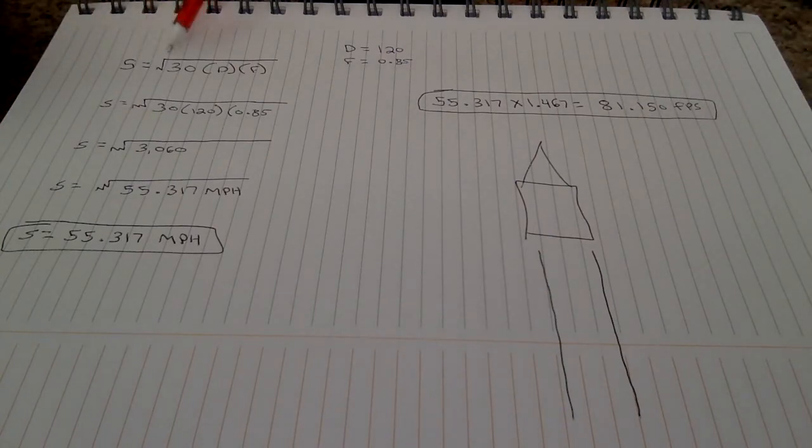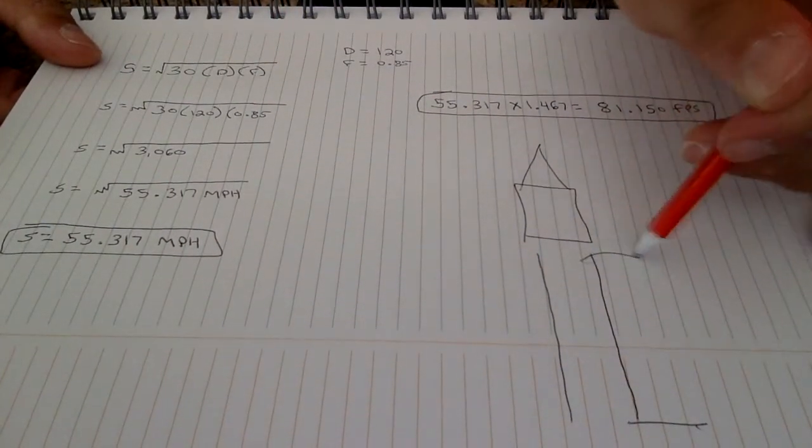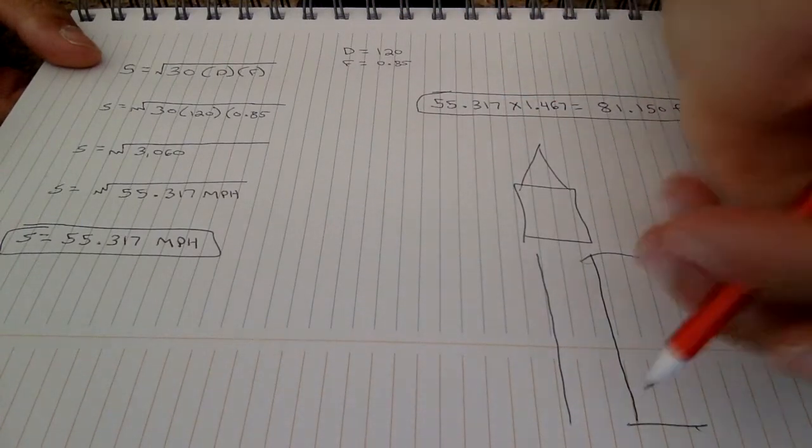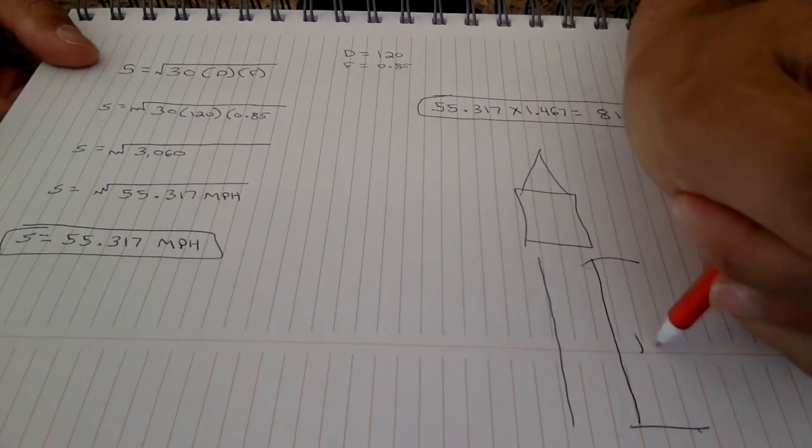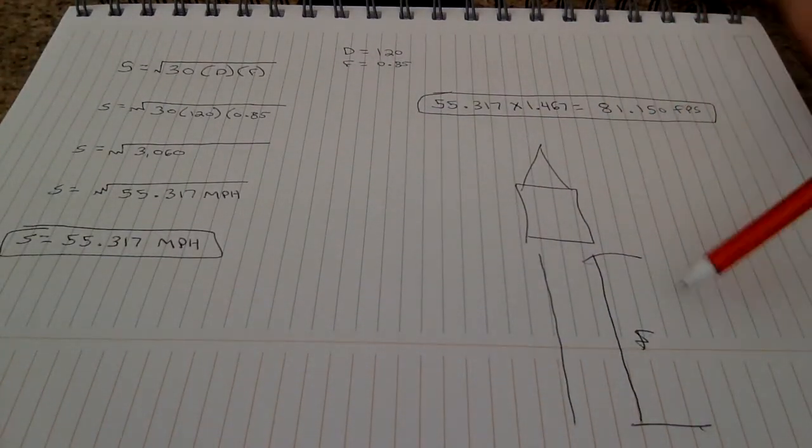So up here we have speed equals the square root of 30 times distance times force. Distance is simple. You're just going to measure from A to B, and for this example, let's say the distance is 120 feet right here.